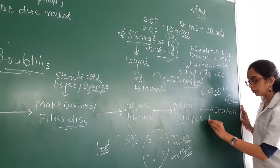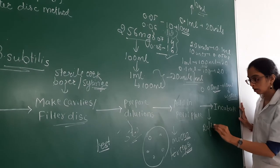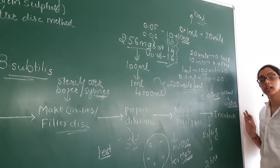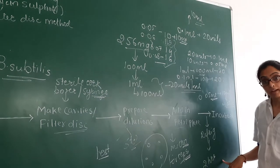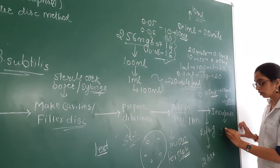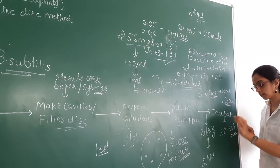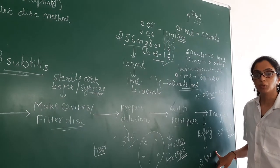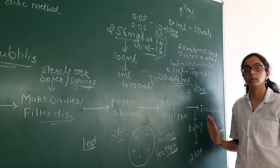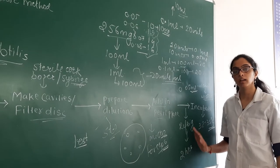After preparing the dilutions of the test and standard, add both to the Petri plate using a pipette or forceps for disc diffusion. After that, refrigerate for 2 hours for diffusion of the antibiotic, then incubate at 32–35°C for 24–48 hours.